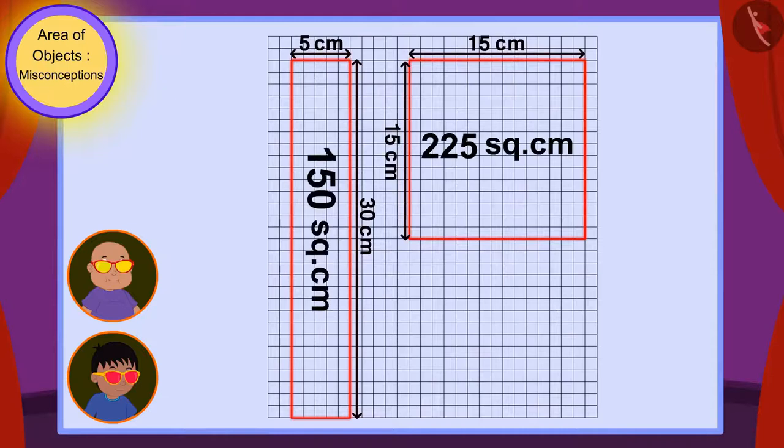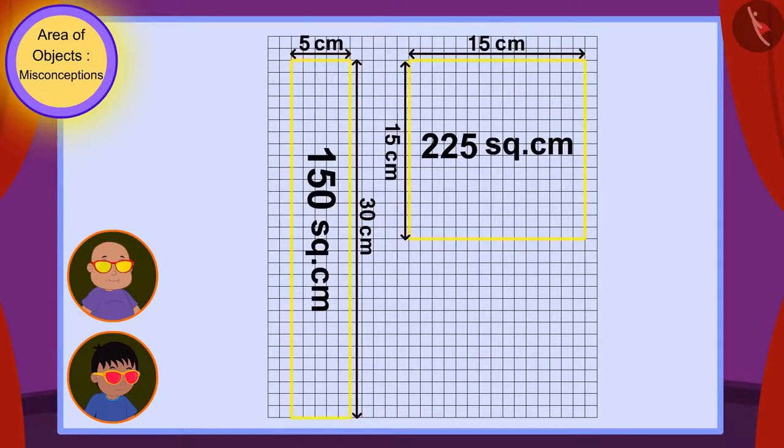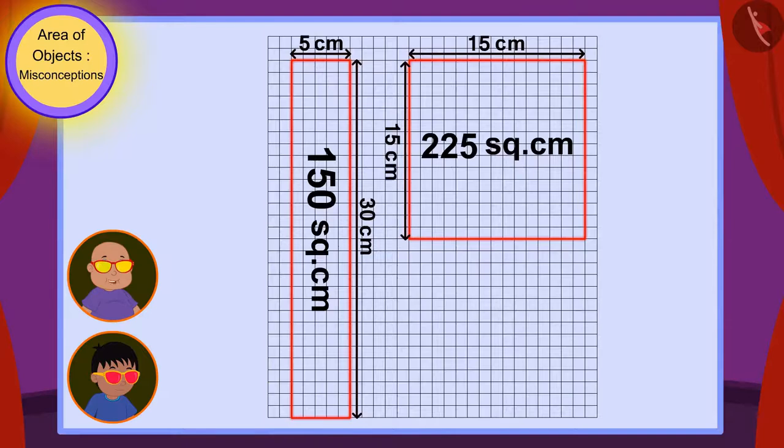Raju and Babalu also found the area of the surfaces of both tables just like you. Look, Raju, the area of the rectangular table is 150 square centimeters.